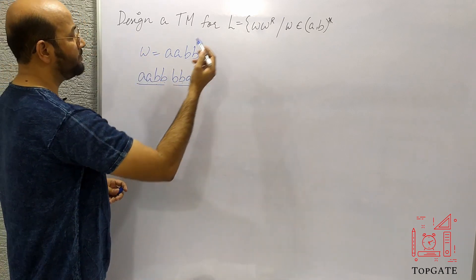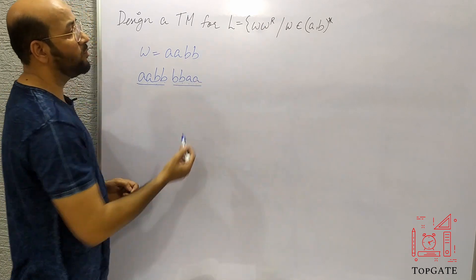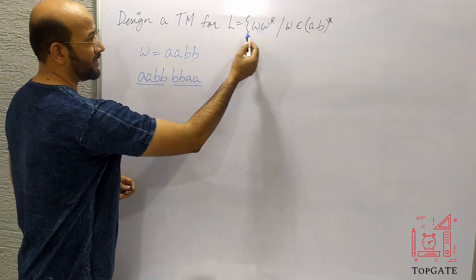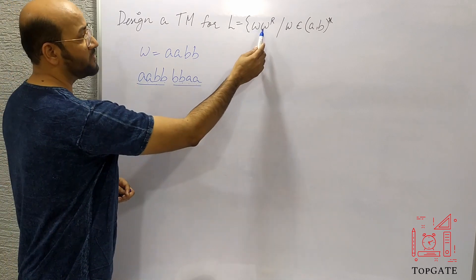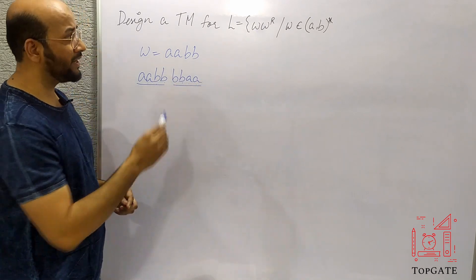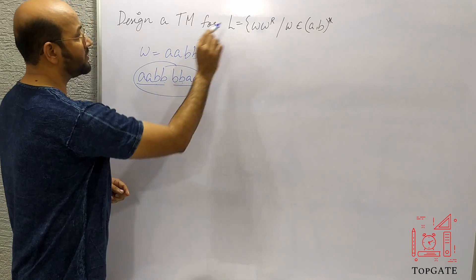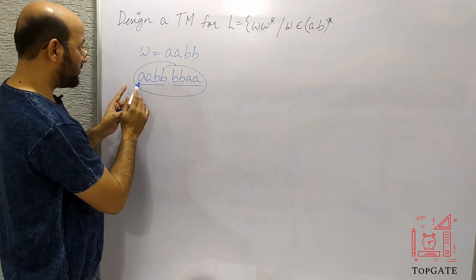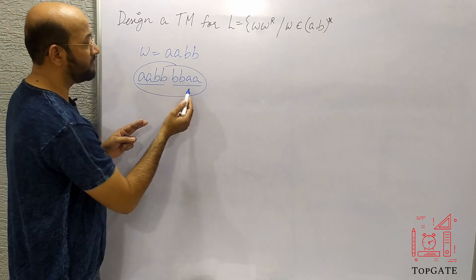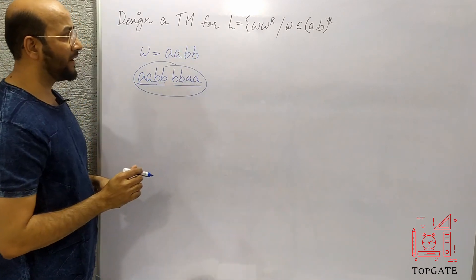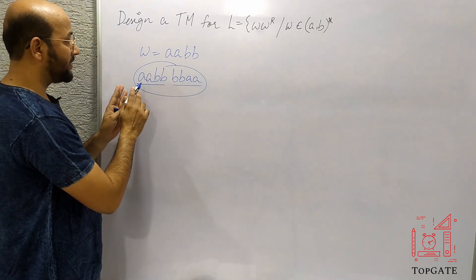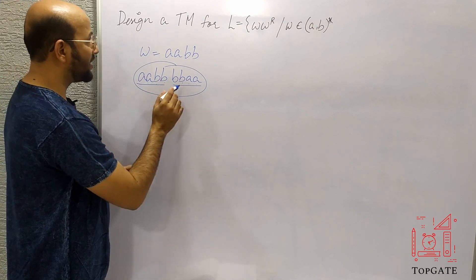If the length of W is even, the length of the whole string WW^R will also be even, because even plus even is even. And if the length of W is odd, odd plus odd is also even. So in any case the length of strings in this language will always be even. If you analyze this closely, you can see it is actually a palindrome — you read it from either direction and it will always be the same string. That is why we sometimes call it the even palindrome problem.